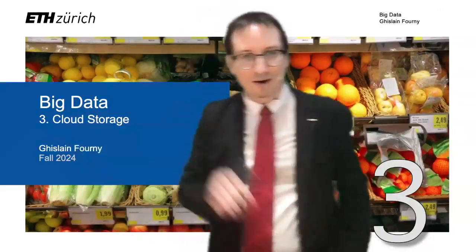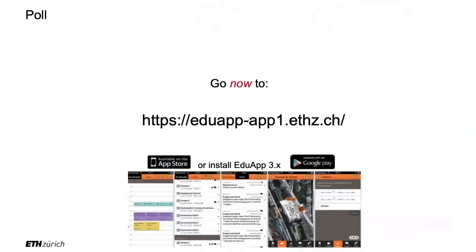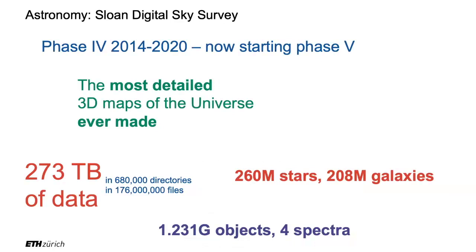Welcome back. We are in the third part about cloud storage. What's going to happen is we are going to start looking at how we solve problems. One of the problems we want to solve is: imagine we want to query astronomical data — the map of the universe done between 2014 and 2020. I went to the website and found there are 273 terabytes of data you can download.